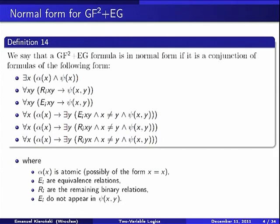Then we considered the two-variable guarded fragment with equivalence relations in guards. The normal form of the formulas allows: existential statements about elements, restrictions on connections between pairs of connected elements — where equivalence relations are denoted E_i and non-equivalence relations by r_i — and formulas saying that elements satisfying atomic properties require witnesses. For all x, if x satisfies some atomic formula, there exists y connected to x either by E_i or a non-equivalence relation, and this connection must satisfy some properties.